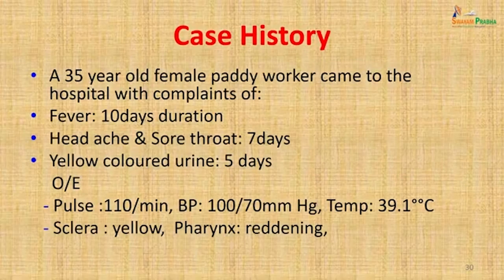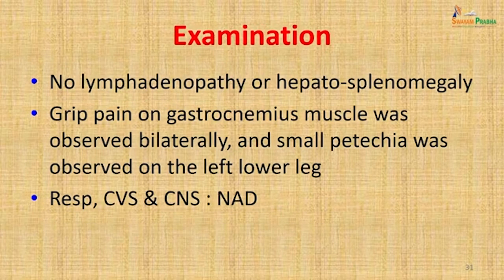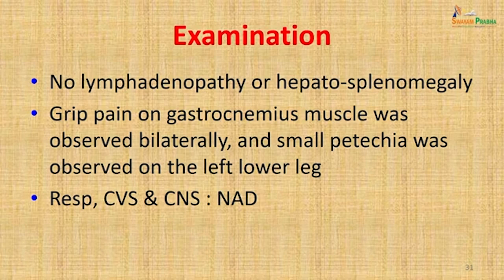Moving to Leptospirosis: a 35-year-old female paddy worker presented with fever of 10 days duration, headache and sore throat of 7 days duration, and yellow-colored urine for 5 days. On examination, pulse was 110 per minute, BP 100/70 mmHg, temperature 39.1°C, sclera was yellow, pharynx showed reddening. No lymphadenopathy or hepatosplenomegaly was seen, but there was grip pain on the gastrocnemius bilaterally and a small petechiae on the left lower leg.